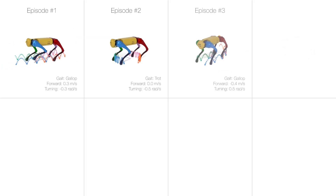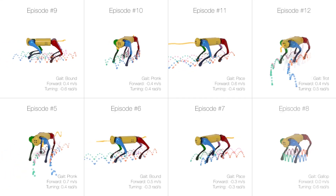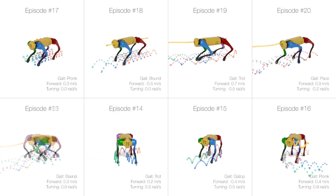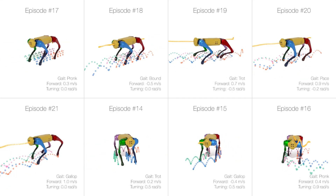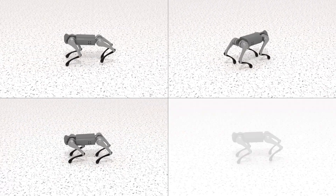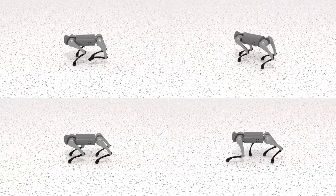Furthermore, we generate the reference motions on demand during RL training with a randomly selected body velocity command and a desired gait pattern. This strategy enables us to develop a more versatile controller supporting runtime gait and body velocity switching.